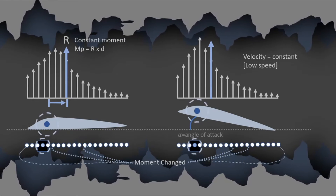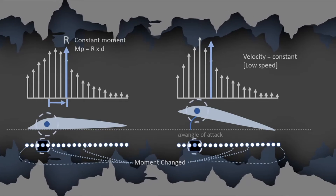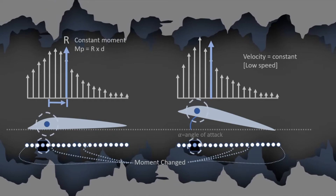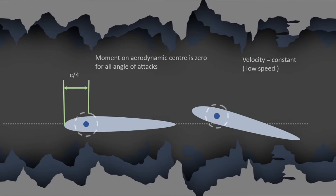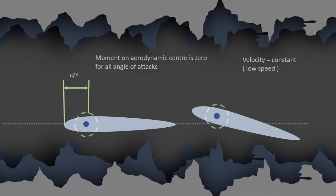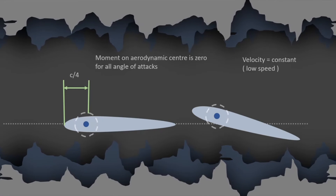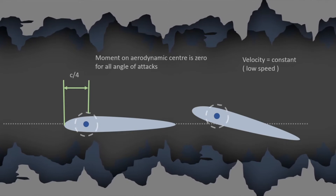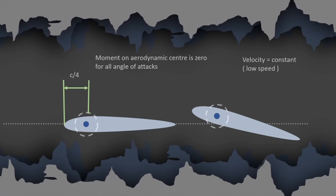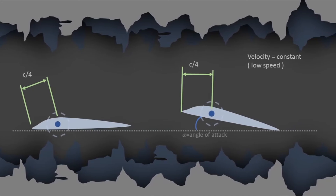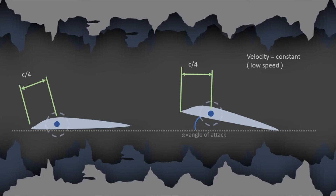It is very important to notice that the aerodynamic center is valid only for low speed, and that the velocity is constant. Theoretically, the aerodynamic center is located at the quarter chord on a symmetrical aerofoil, where the moment generated is always zero. For an unsymmetrical aerofoil, the aerodynamic center is also at the quarter chord, but the moment is constant — not zero.